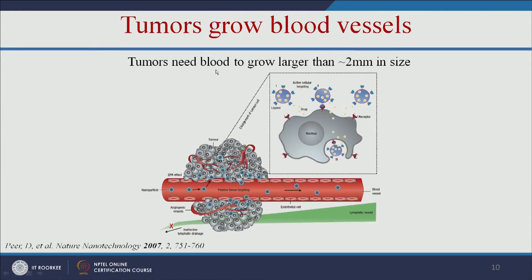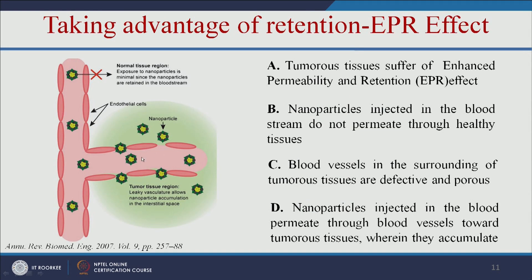Tumor cells need blood to grow larger than 2 mm in size, and tumor cells have damaged, leaky blood vessels. The tumor tissue exhibits enhanced permeability and retention — the EPR effect. We can take advantage of this: nanoparticles injected into the blood go only to the tumor tissue region. In normal tissue there are no leaky blood vessels, but in the tumor tissue region there is leaky vasculature, which allows nanoparticles to accumulate at the tumor location, release the drug, and kill the tumor cells. This is passive targeting.